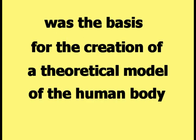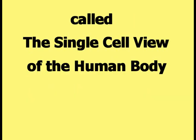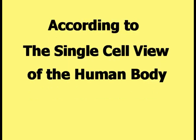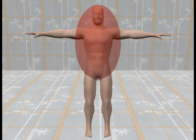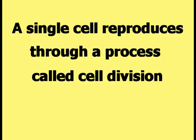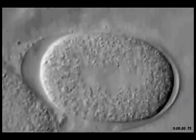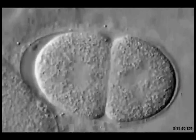This property of the human body was the basis for the creation of a theoretical model called the single cell view of the human body. According to this view, it is useful to treat the human body as if it is a large single cell, located as shown in this picture. A single cell reproduces through a process called cell division, as shown in this animation of a single cell dividing into two new identical single cells.